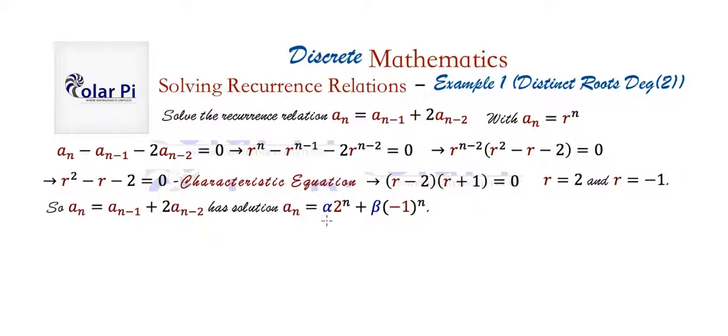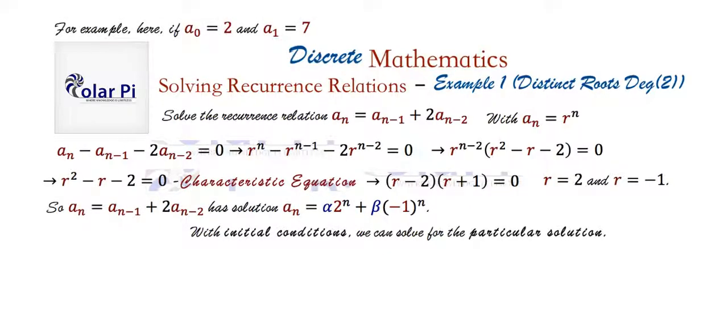And of course, if you're given initial conditions, then you can solve for alpha and beta to get that particular solution, as opposed to the general solution, which we're done with here. This is the general solution to that. To find the particular solution, like I said, we need initial conditions. And so let's say here that we're given the initial condition that a zero is 2 and a one is 7.